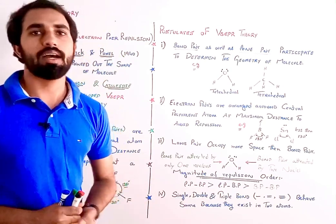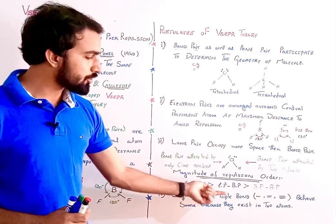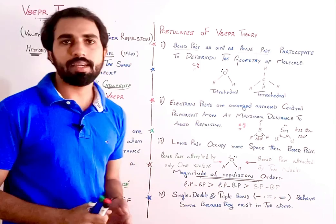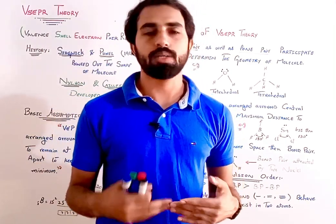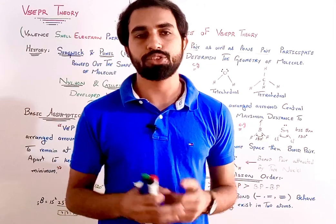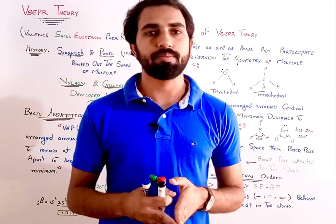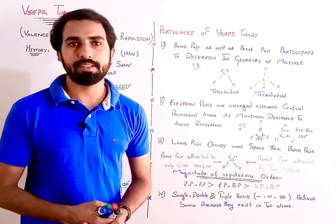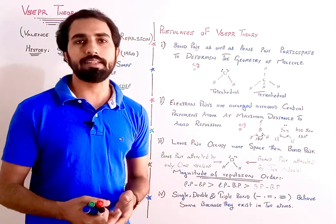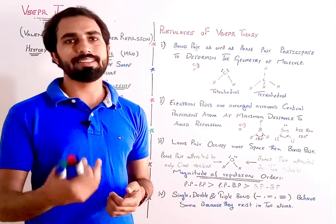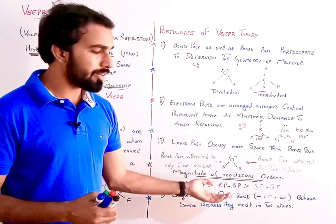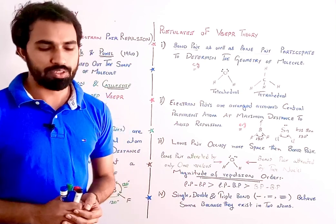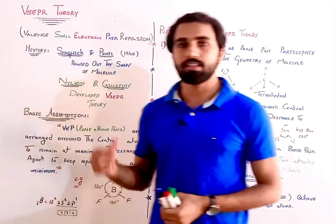Next, last postulate جو VSEPR theory کا ہے وہ یہ ہے — single, double یا triple bond کی اگر بات کریں: single bond بھی دو atoms کے درمیان exist کرتا ہے، double bond بھی دو atoms کے درمیان exist کرے گا، اور triple bond بھی دو ہی atoms کے درمیان exist کرتا ہے۔ لیکن electron density کی بات کریں تو single bond کی نسبت double میں electron density بڑھ جاتی ہے، triple میں مزید بڑھ جاتی ہے۔ لیکن یہ دو atoms کے درمیان ہی exist کرتے ہیں، اس لیے linear way میں لیتے ہیں — geometry میں ان کا participation same ہوگا according to VSEPR theory۔